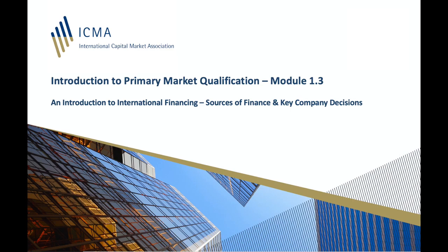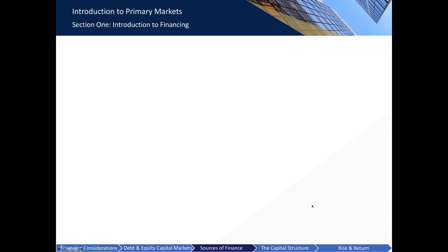Welcome to Module 3, Section 1 of Introduction to Primary Markets. In Modules 1 and 2 of this section we discussed the capital market function and the fundamentals of debt and equity products. In this module we will consider the sources of finance available to a borrower and the key decisions that it needs to make when assessing its financial options.